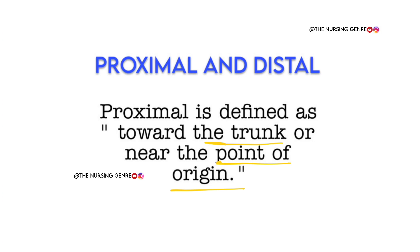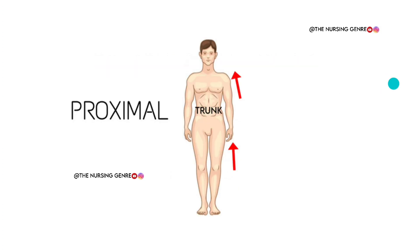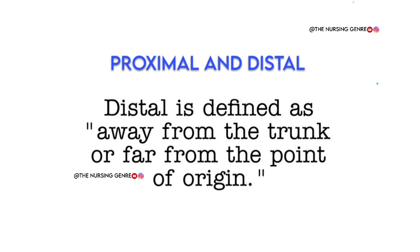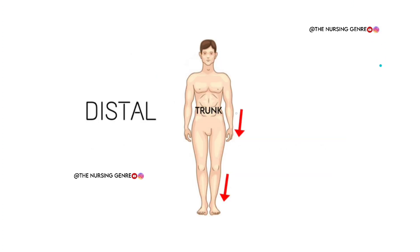Proximal is nothing but closer to the trunk or point of origin. Here we can look at the picture — the two arrows are towards the trunk and point of origin, so we call it proximal. Whereas distal is the opposite — away from the trunk or far from the point of origin, so distal is away and proximal is closer.